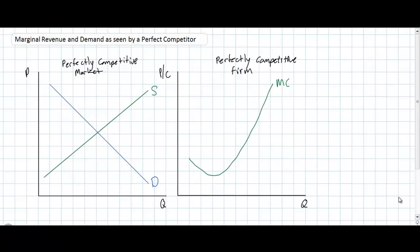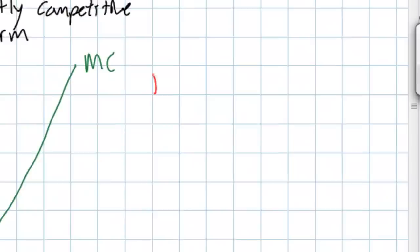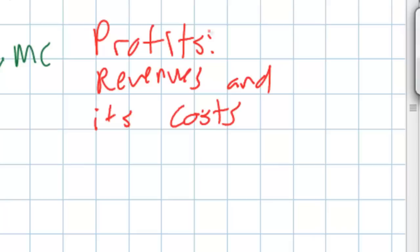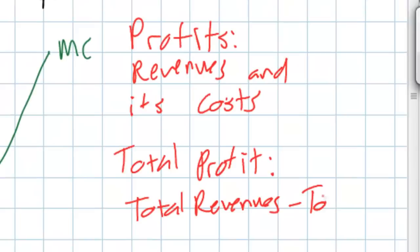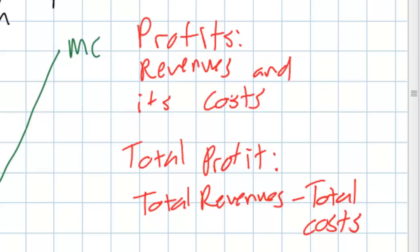Hello everybody. In previous lessons we have gone over extensively how a firm's short-run costs of production are determined by the law of diminishing marginal returns. In today's video lesson we're going to talk about revenues. A firm in a market economy is interested in maximizing its profits, and any firm interested in maximizing profits must take into account both its revenues and its costs. Total profit is simply a function of total revenues and total costs — a firm's total revenues minus its total costs tell us the firm's level of economic profit.